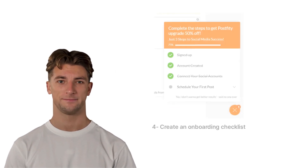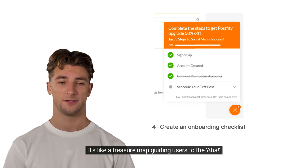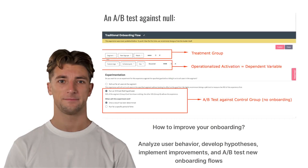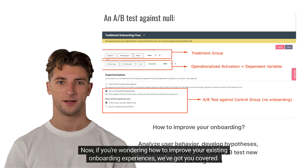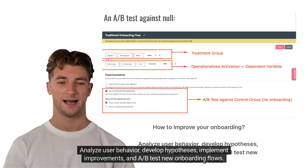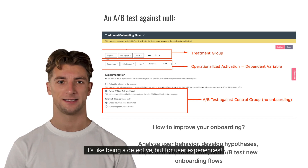Number four: create an onboarding checklist with a progress bar. It's like a treasure map guiding users to the aha moment. Now, if you're wondering how to improve your existing onboarding experiences, we've got you covered. Analyze user behavior, develop hypotheses, implement improvements, and A/B test new onboarding flows. It's like being a detective, but for user experiences.